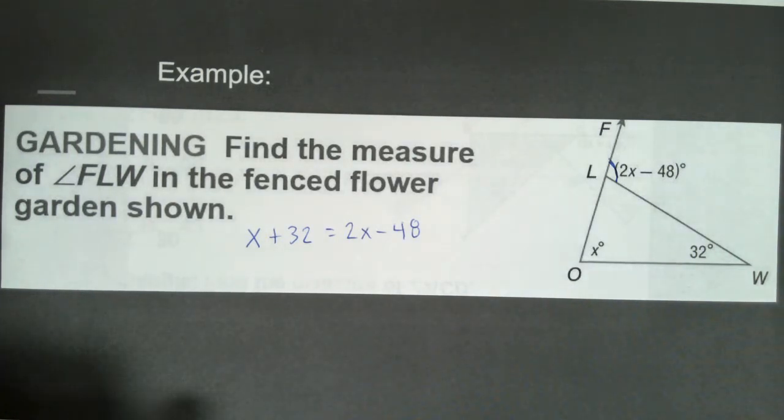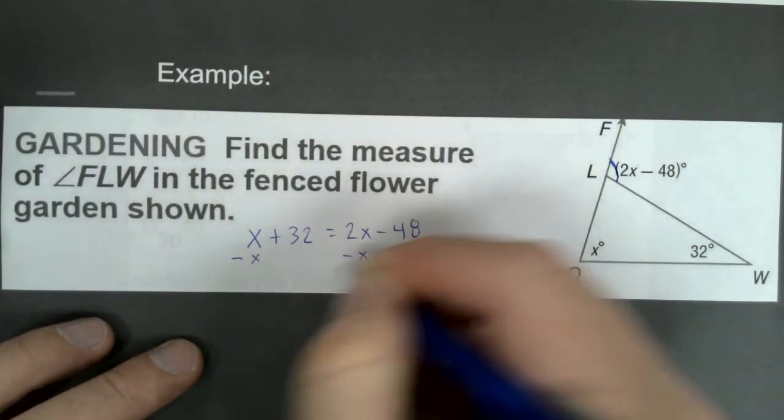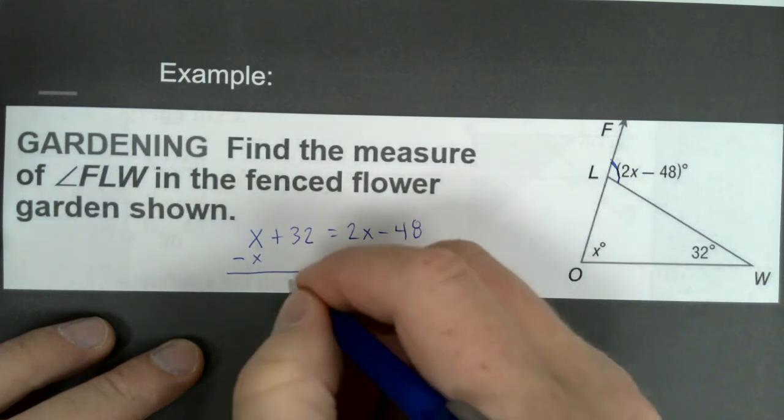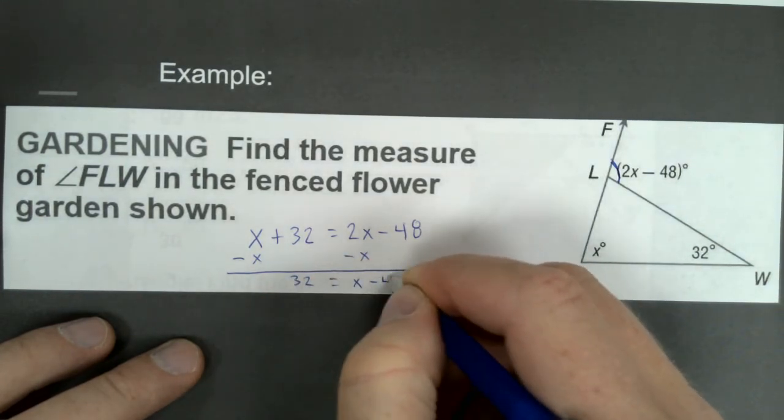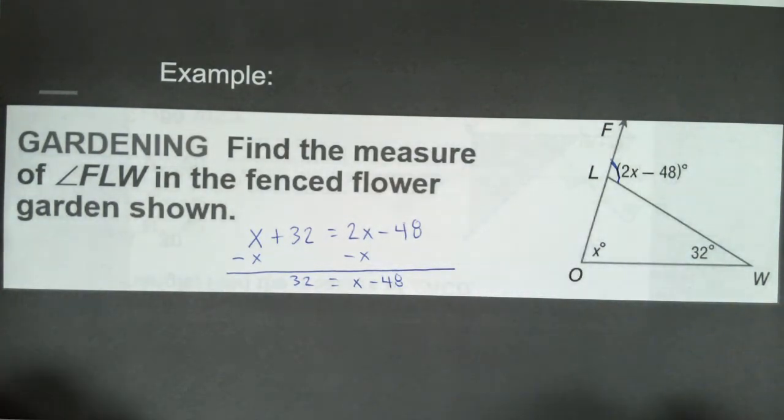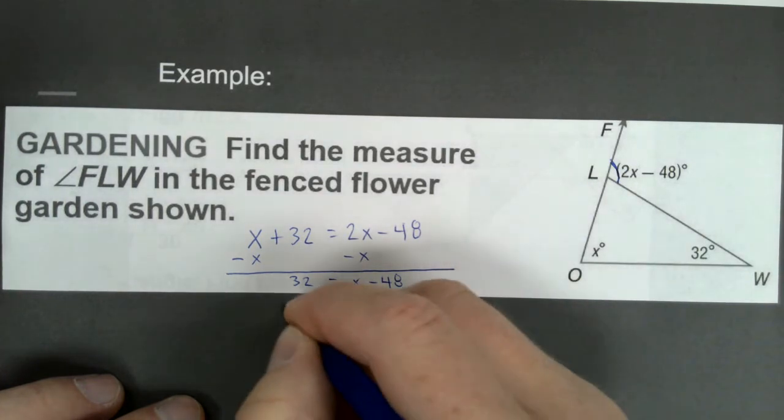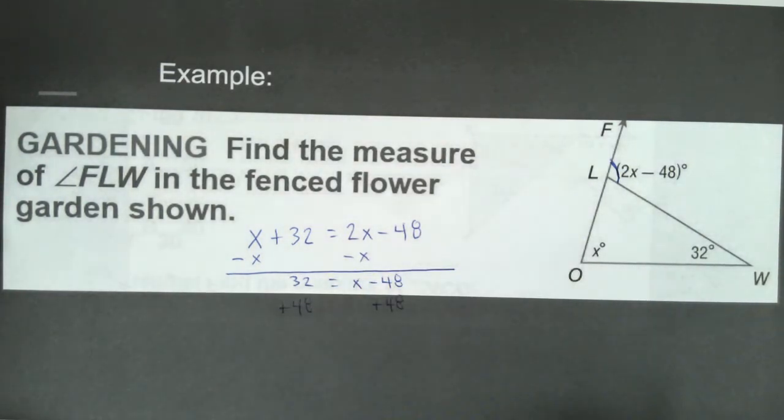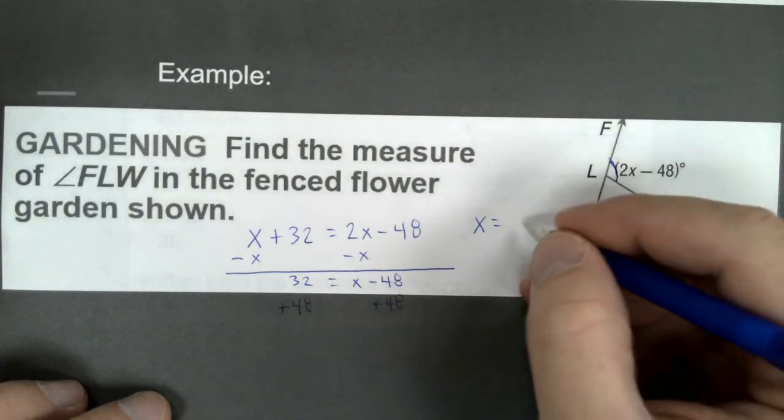This is going to allow me then to solve for x. So if I subtract x from each side, I get 32 equals x minus 48. And if I then add 48 to both sides—now that's probably hard to see a little bit there with the dark colored paper—but if I add 32 and 48, I'm going to get x equals, looks like to me, 80.